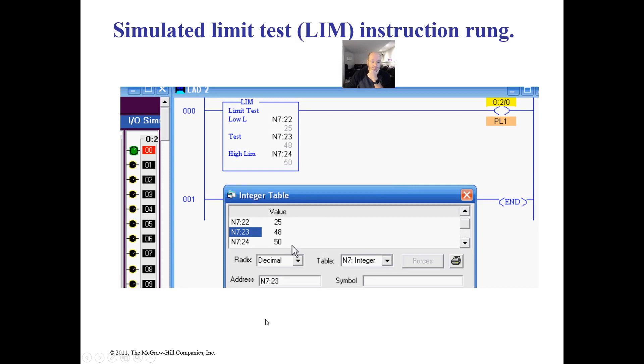Anytime my test value is in between there, it will be true. If it's outside of that value, it will be false. Let's take a look. You can see here I'm at 48, it's true. If I go to 51, it would be false. If it's at 50 it would still be true, and if it's at 25 it would be true, but if it's at 24 it's going to be off.